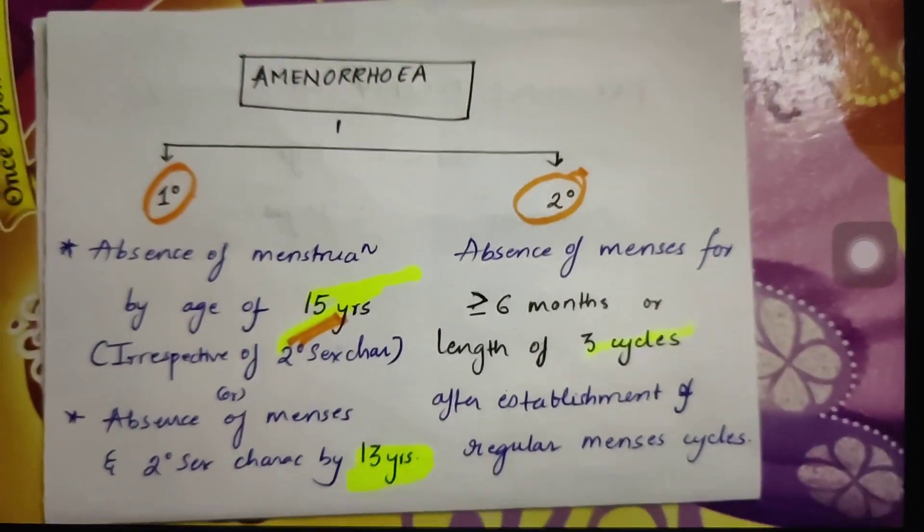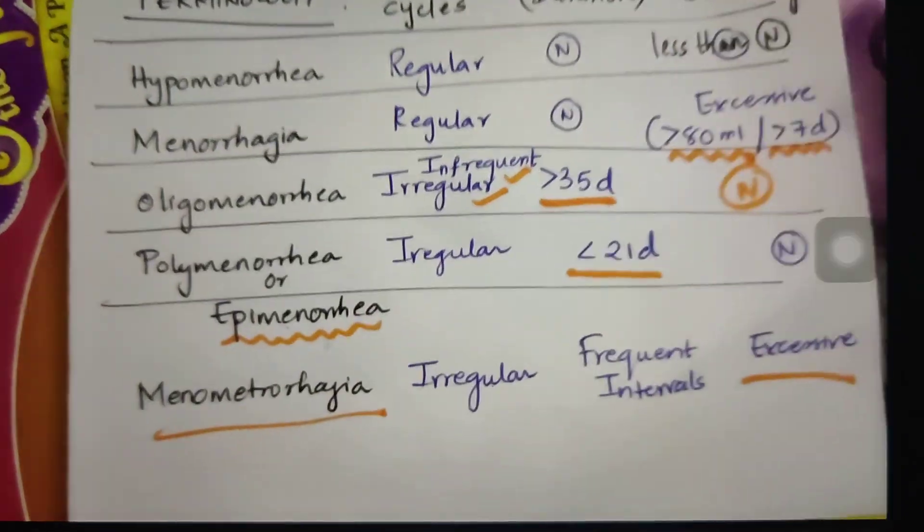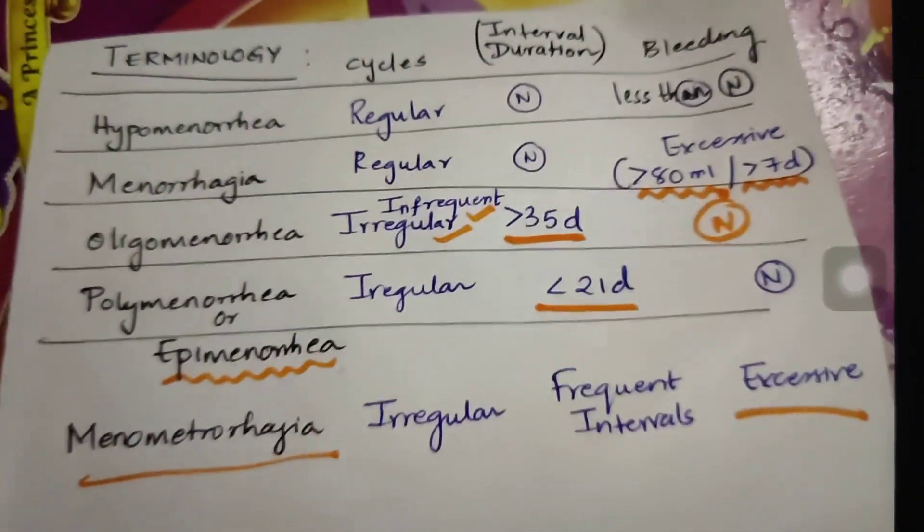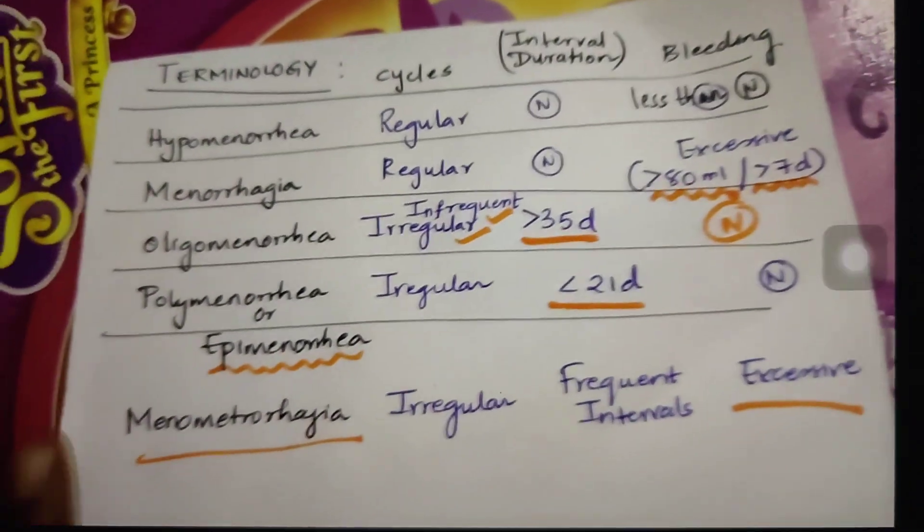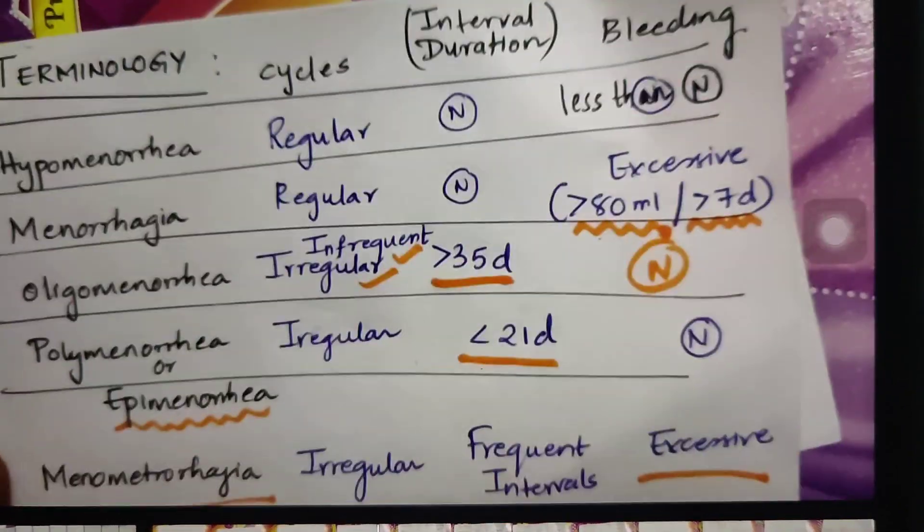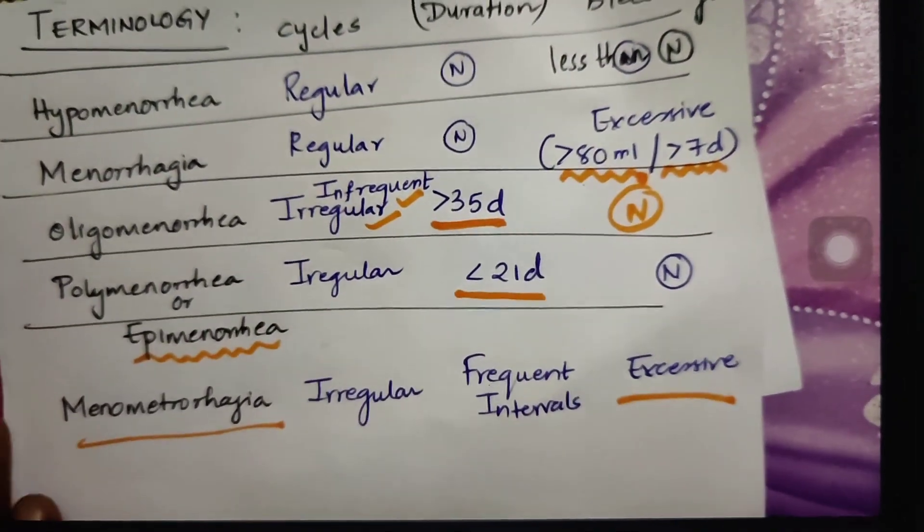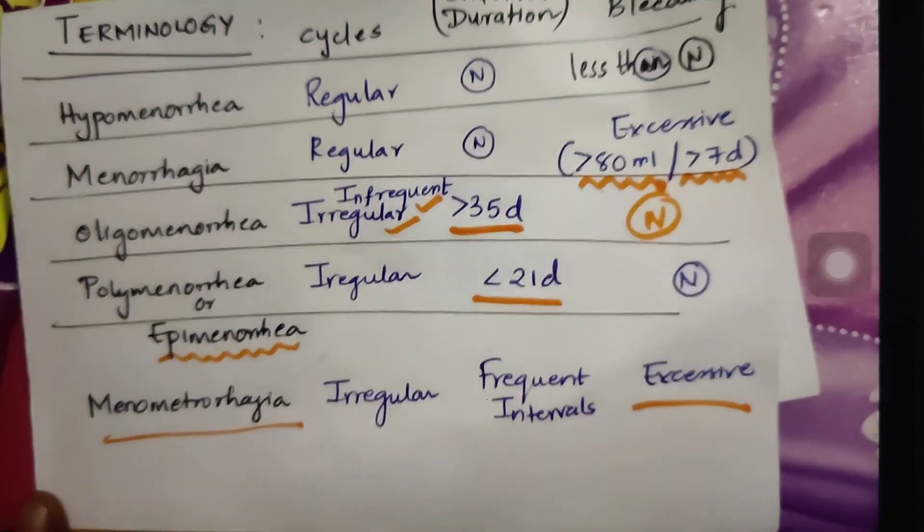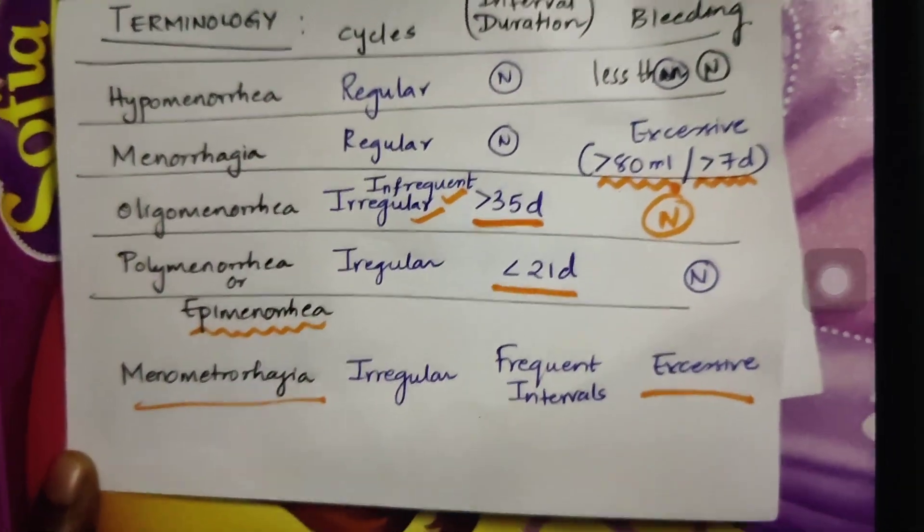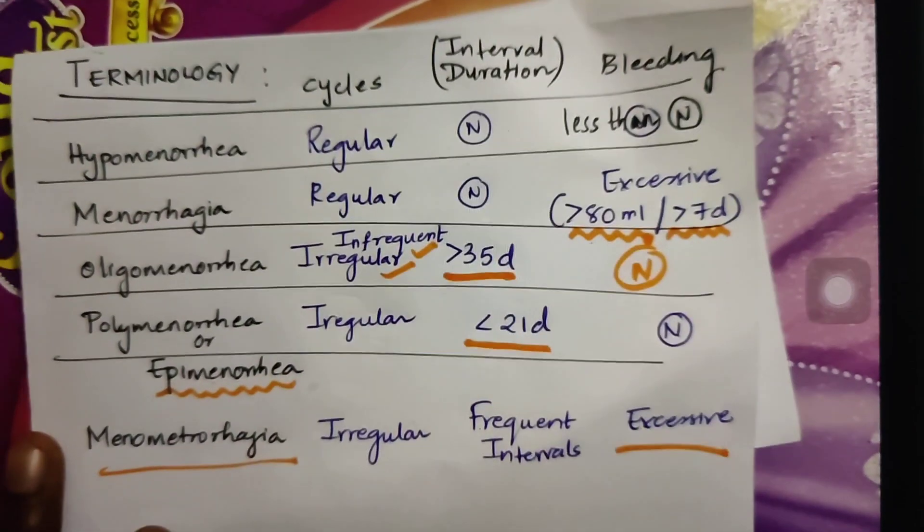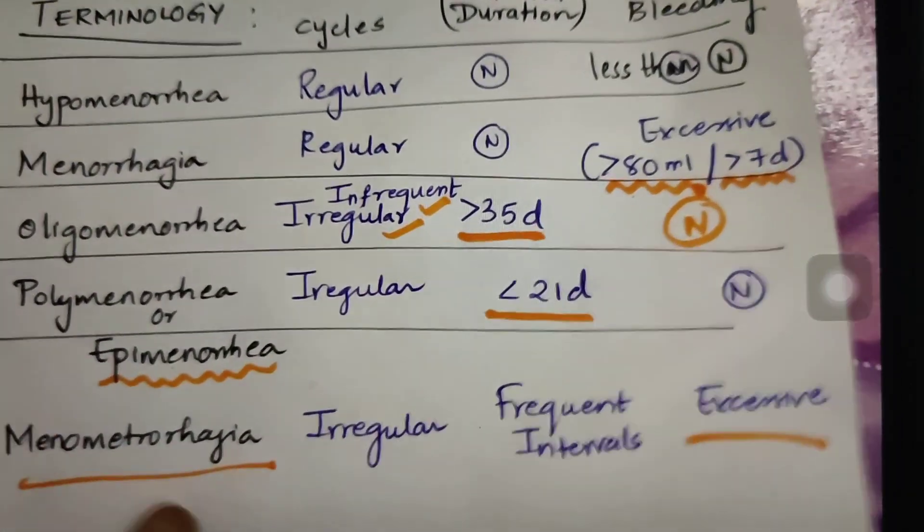While learning about this topic, let us also understand two terminologies that are important: hypomenorrhea, menorrhagia, oligo, poly, and menometrorrhagia. Here I have written them in a tabular format for you. You can either take a screenshot or I'll try to provide the PDF of this entire session in my Telegram channel, the link to which is provided in the description below.